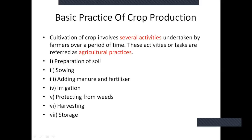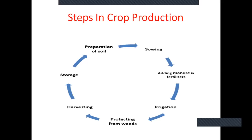So these are the several steps the farmer has to take. Today we are going to study the first step. Let's have a recap: preparation of soil, sowing, adding manure and fertilizer, irrigation, protecting from weeds, harvesting, and last is storage. Today we are going to deal with the first step — that is preparation of soil.